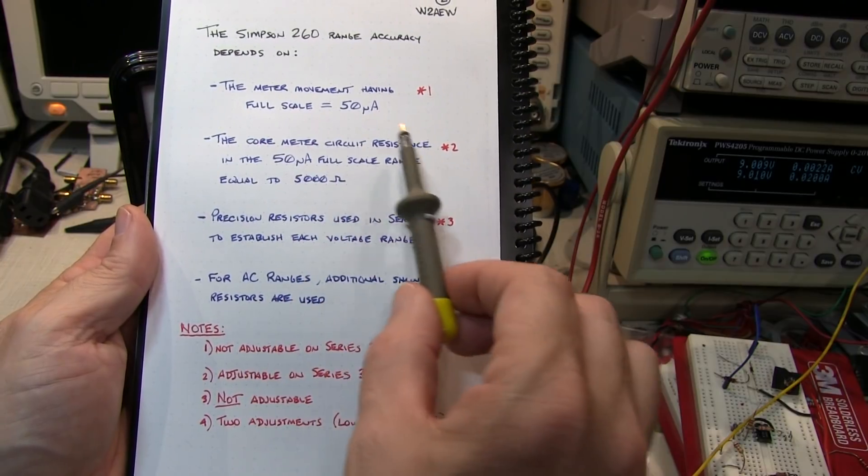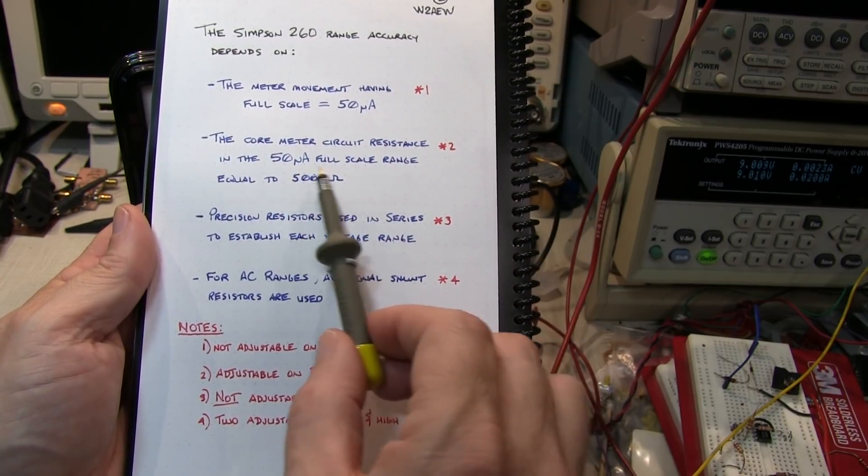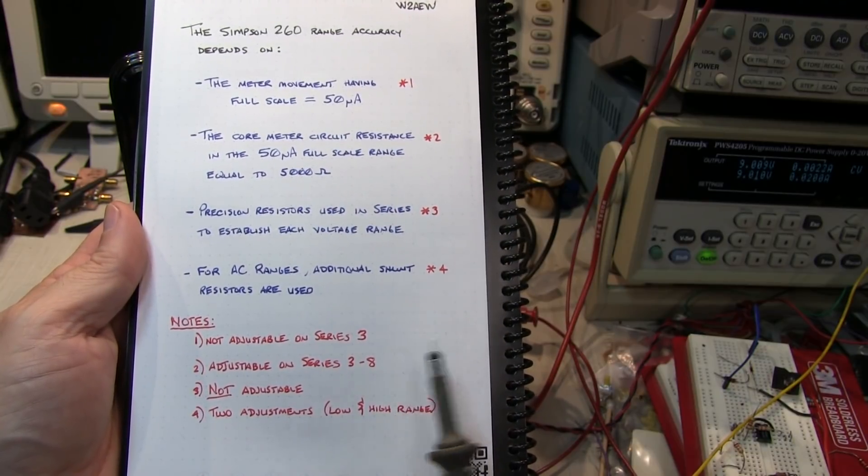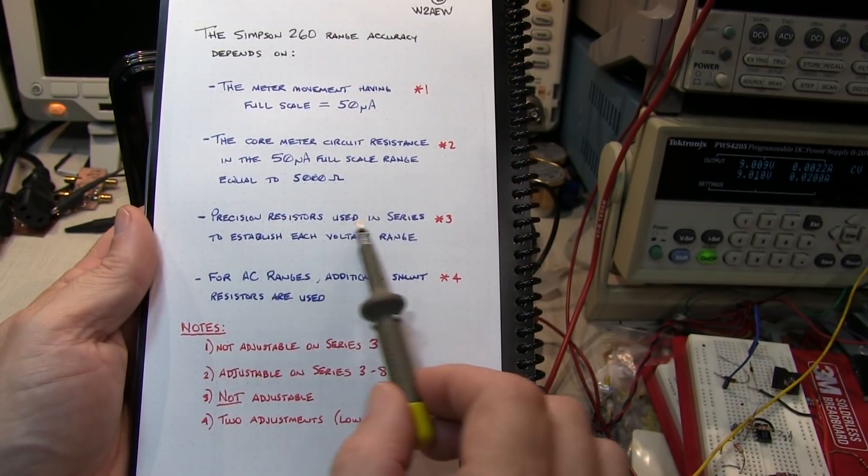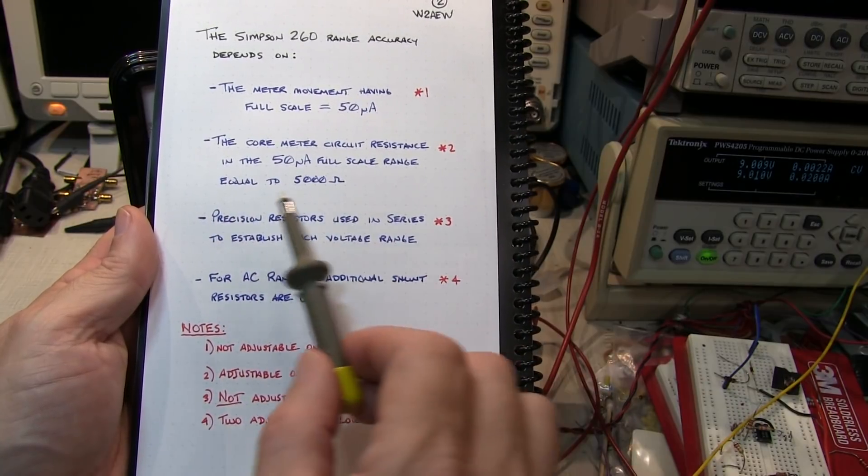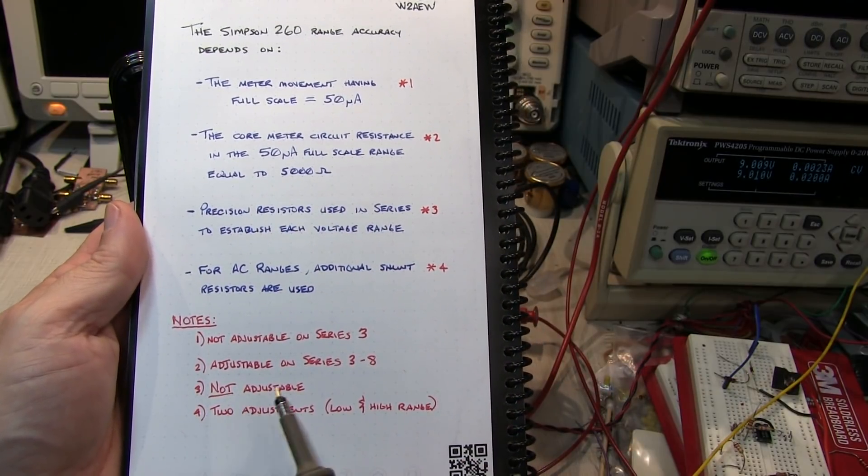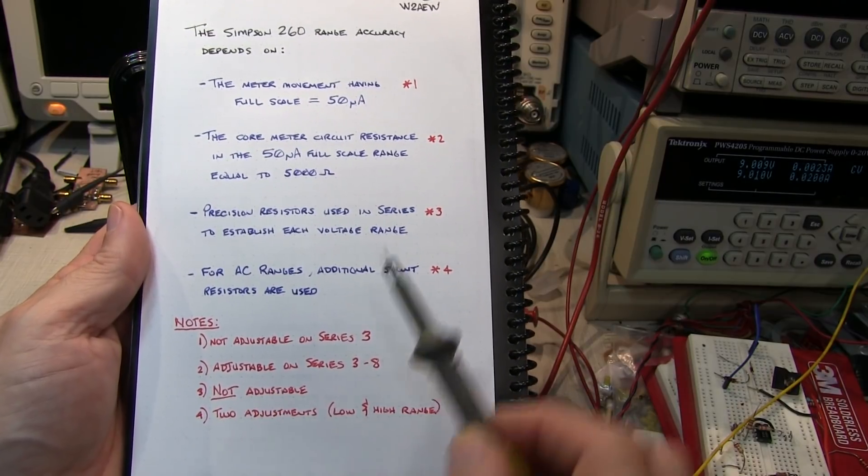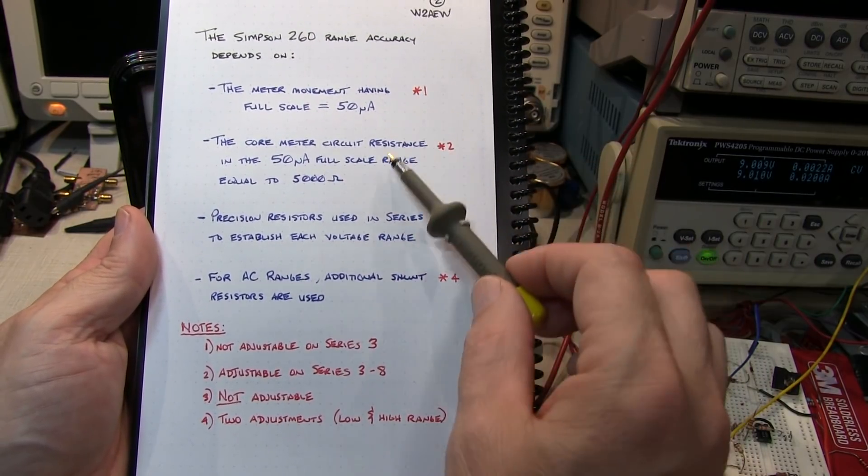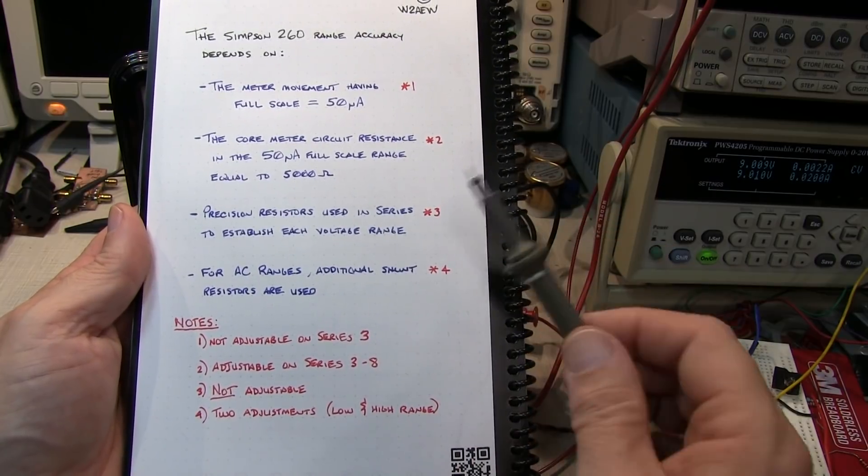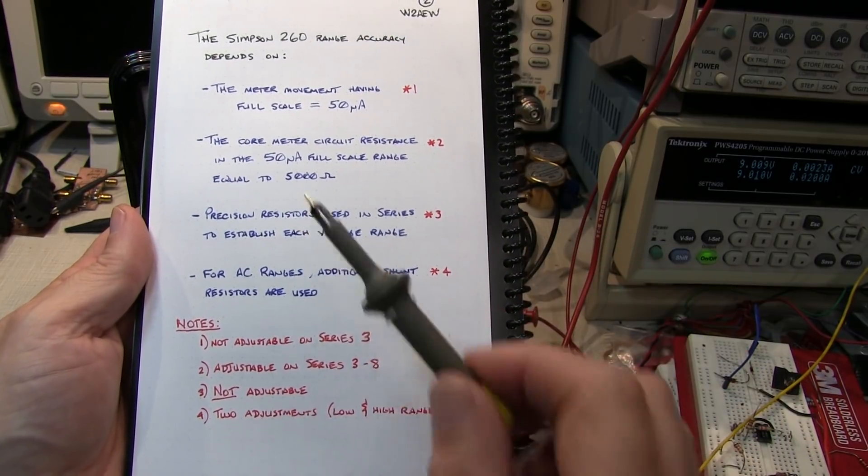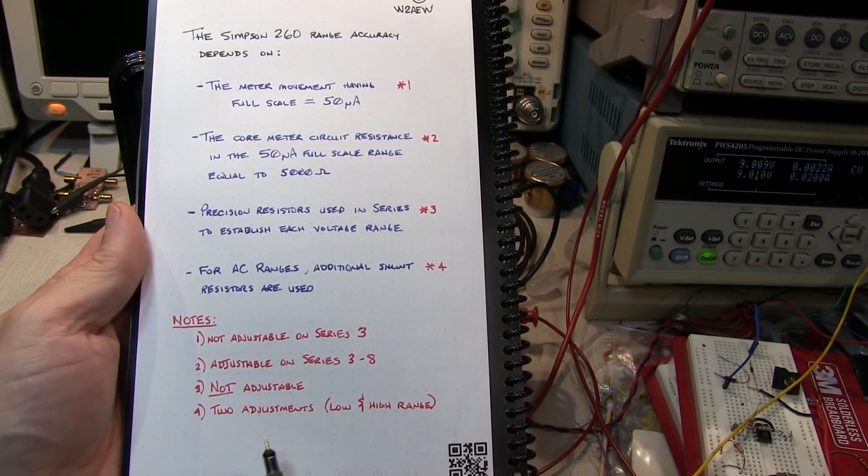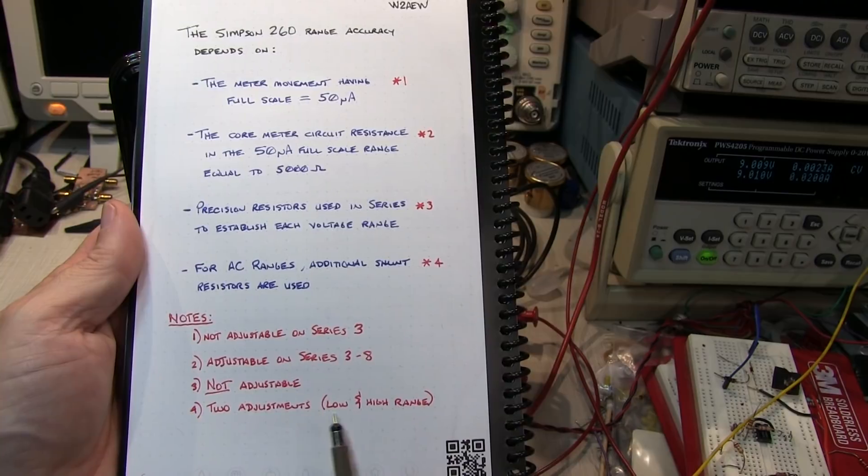The core meter circuit resistance of 5,000 ohms is adjustable on the series 3 through 8. The precision resistors used to establish each voltage range are not adjustable. They rely on having good, precise resistors. For the AC ranges, there are two additional adjustments, one at a low AC voltage range and one at a high AC voltage range.